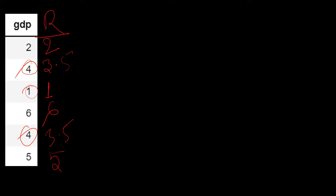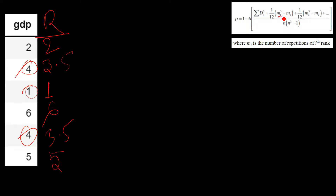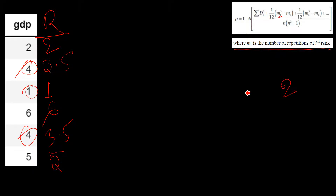Now let's look at the formula again. There is a value 'm' in the formula, which represents the repetition of a rank. For example, the rank that was repeated in our example was repeated twice, so m1 equals 2. If another number is repeated three times, then m2 equals 3. This is how it works. Now we have the ranking created for GDP — you can compare it to confirm.